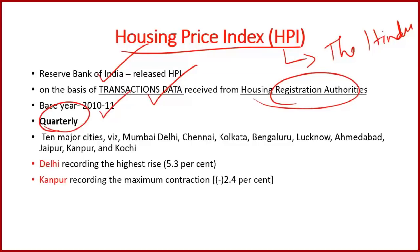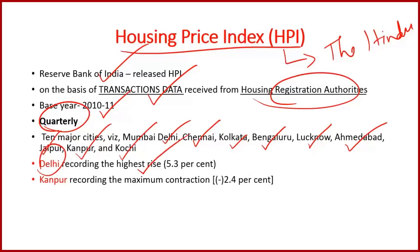The 10 cities used for calculating the Housing Price Index include Delhi, Chennai, Kolkata, Bangalore, Lucknow, Ahmedabad, Jaipur, Kanpur, and Kochi. Based on the latest RBI data, Delhi recorded the highest rise in house prices, whereas Kanpur recorded the maximum contraction of minus 2.4 percent for the current quarter.